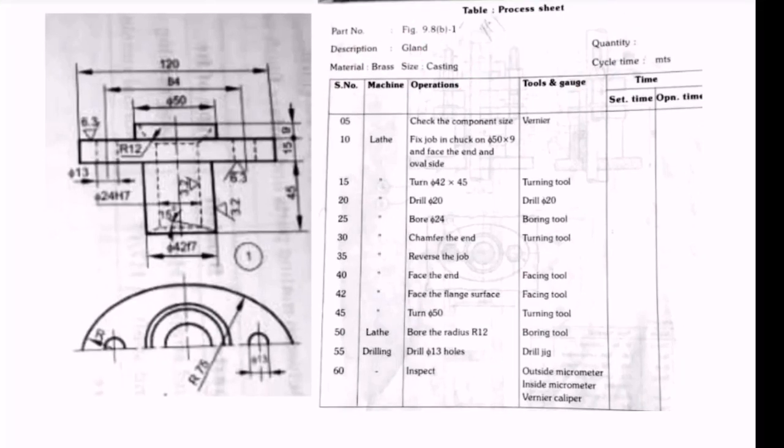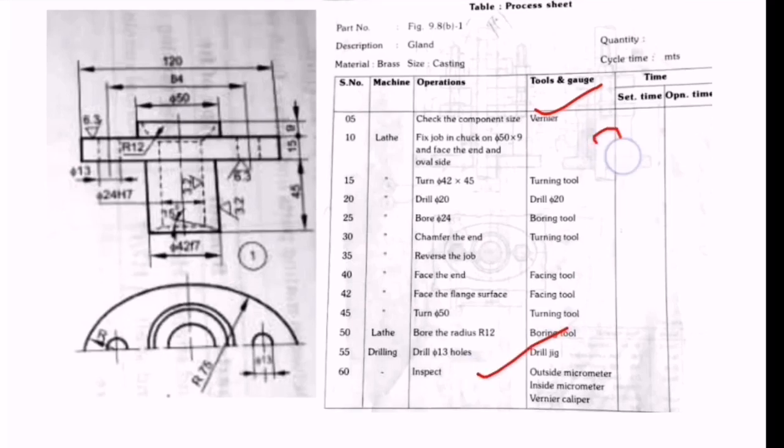We need to understand the first and last important operations. The first operation is checking the component sizes, and the final one is inspecting the element. All remaining operations in between - on lathe machine, drilling machine, or milling machine - are maintained in sequential manner. This is the complete information about process sheets.